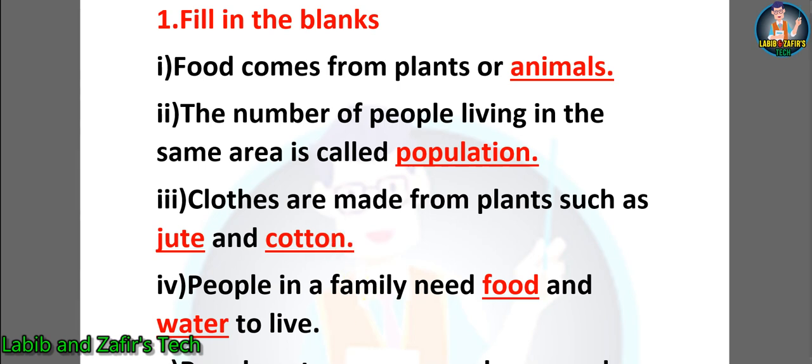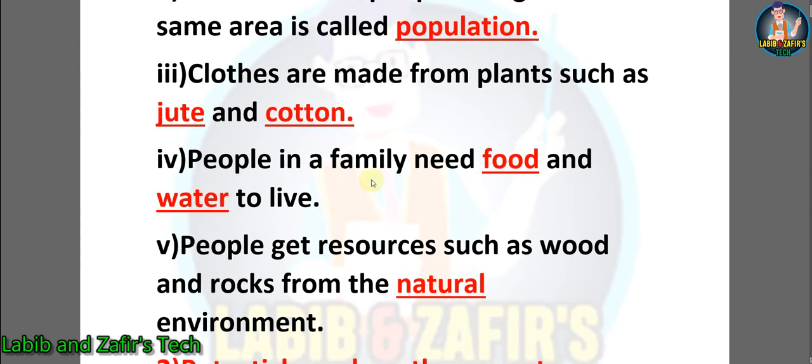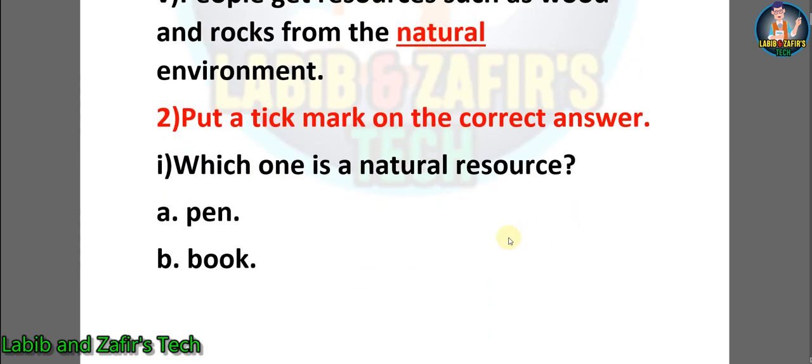Number four: people in a family need food and water to live. Number five: people get resources such as wood and rocks from the natural environment. Now students, let's go to some tick marks.